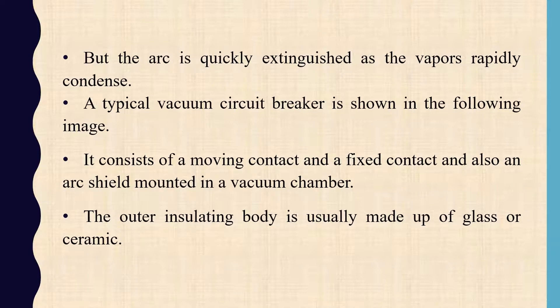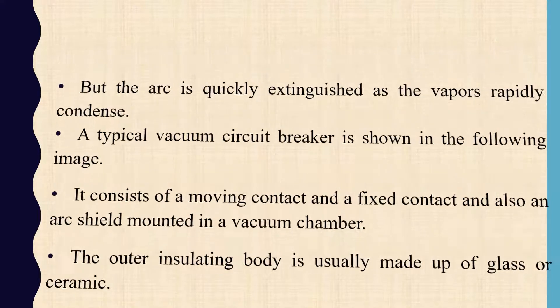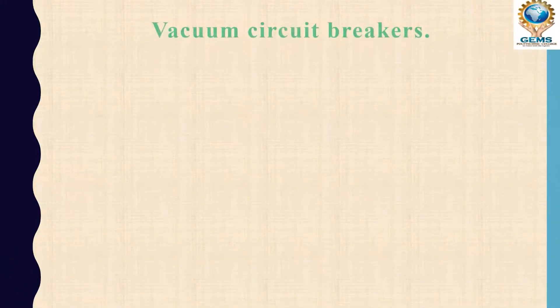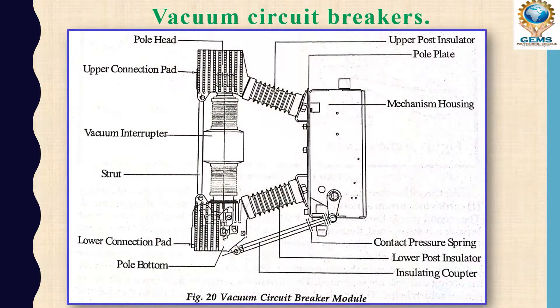Now we can see the vacuum circuit breaker diagram. This is the diagram of the vacuum circuit breaker. Note that this diagram is showing only one conductor - one phase. In a three-phase system there would be three such units.